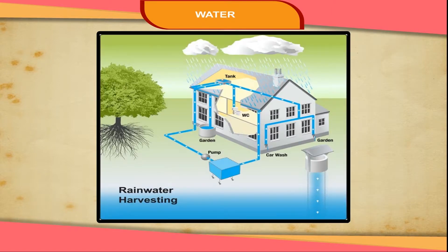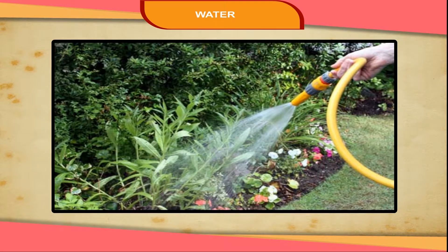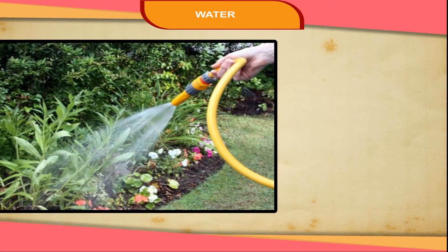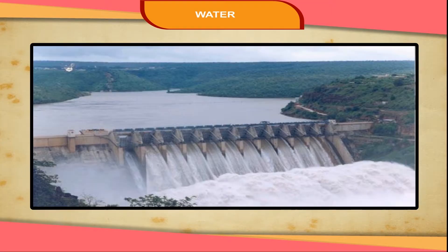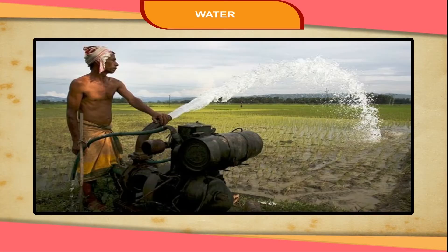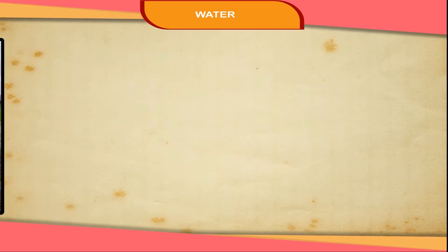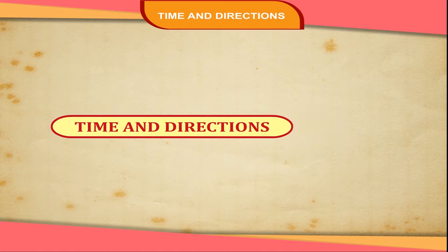We should collect the rainwater whenever it rains. We can use it for washing and watering plants. Water is used to make electricity. Water is used by farmers to water their fields and grow crops for us.